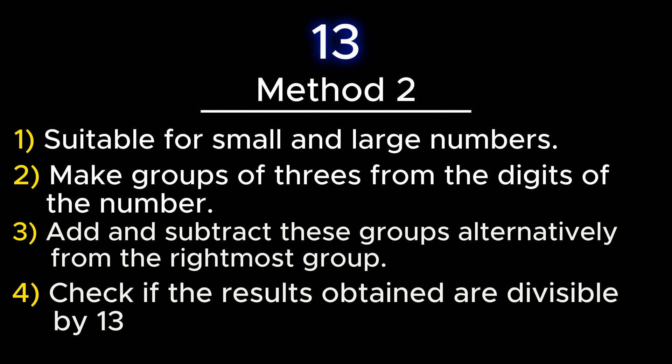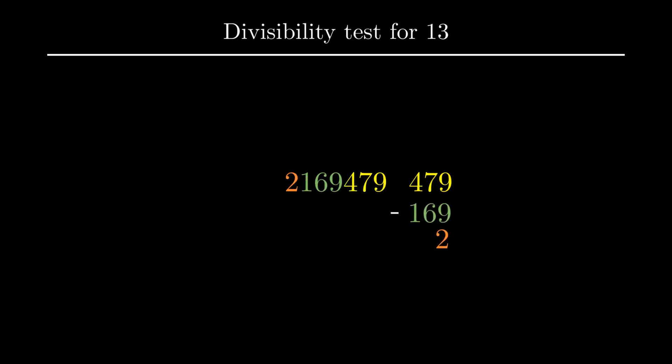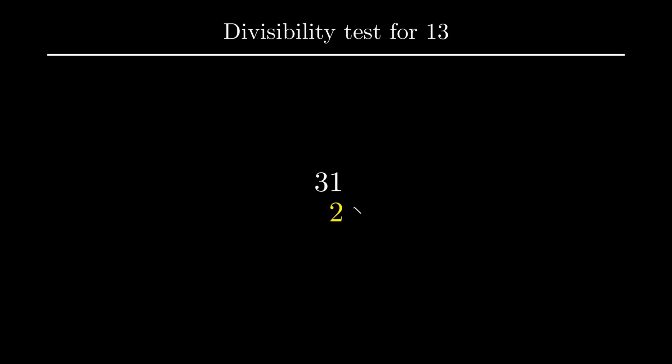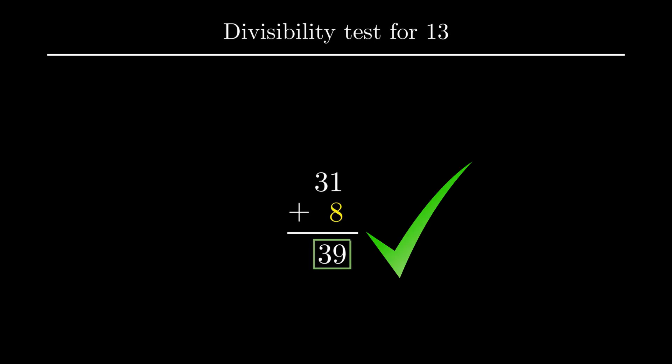Consider the number 21,69,479. The first group of 3 digits from the extreme right is 479, the second group is 169, and the third group contains only 1 digit, that is 2. Applying subtraction and addition alternately: 479 − 169 + 2, which gives 312. Since it's now a 3-digit number, apply the first test: 2 is multiplied by 4 to give 8, which is added to the remaining digits 31, giving 39. Since 39 is divisible by 13, the given number is also divisible by 13.